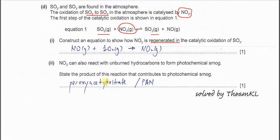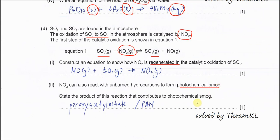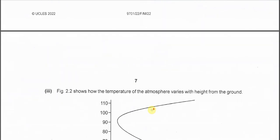NO2 also reacts with unburned hydrocarbon to form photochemical smog. State the products of this reaction that contribute to this photochemical smog. Normally they will ask what is the compound that forms. Sometimes photochemical smog is the answer, but this part already given photochemical smog, so you must give the compound's name. If you cannot really remember this one, you just put PAN, it's the short form of peroxyacetyl nitrate.